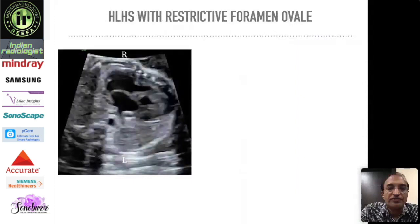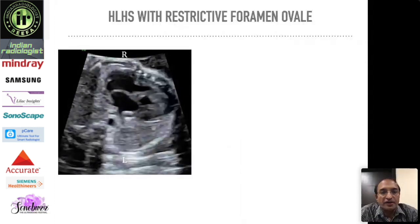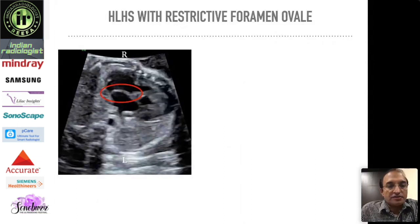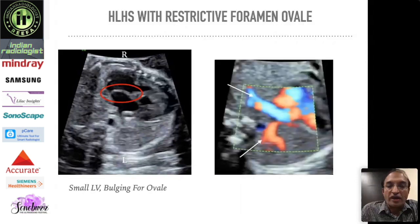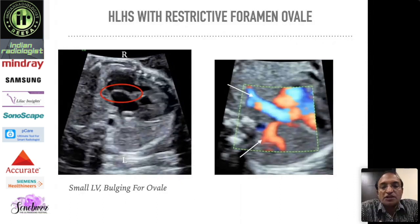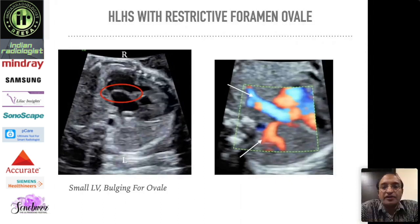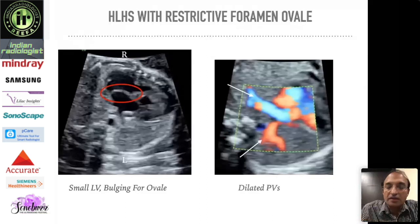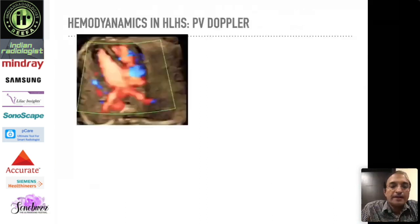There is a specific entity: HLHS with an intact or restrictive foramen ovale. In the previous picture, the only exit for blood from the left atrium was the foramen ovale. Here, the foramen ovale is intact with no opening, actually bulging toward the right side. The mitral valve is atretic, so blood cannot go from left atrium to left ventricle, and with the foramen ovale also restrictive, blood cannot exit the left atrium. Left atrial pressure increases and back pressure causes dilatation and engorgement of the pulmonary veins, identifiable using pulse wave Doppler.